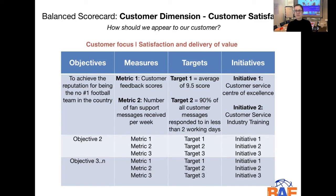The initiatives we could run to help support these objectives and meet those targets could be, for example, building a customer service center of excellence and implementing customer service industry training to make sure we are communicating in the best possible way with our fans. So these are two sets of examples of objectives, measures, targets, and initiatives — use this as a framework to go and build your own balanced scorecard.